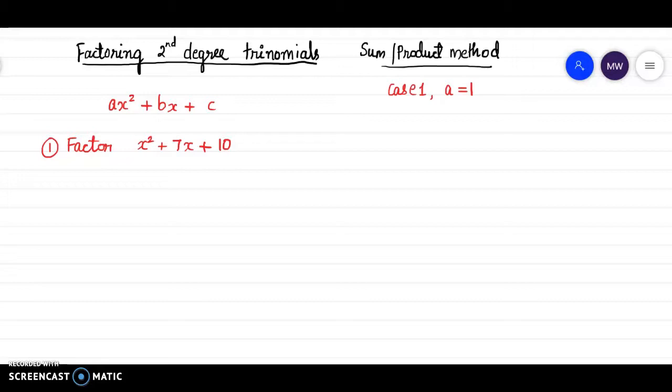So let's try an example here. In example number 1 we have to factor x² + 7x + 10. So first step is to write down what is a, b and c.